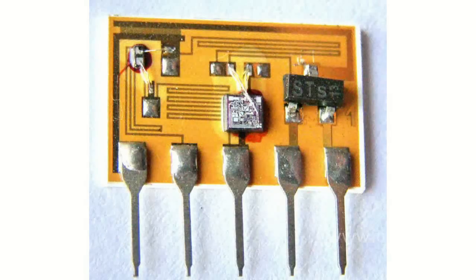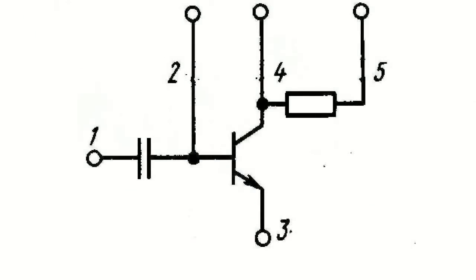The structure of a hybrid integrated circuit may include transistors and diodes, as well as entire semiconductor integrated circuits. Passive elements of hybrid integrated circuits are usually made in a glass-ceramic, ceramic or glass substrate, by applying different dielectric, resistive and metal films.